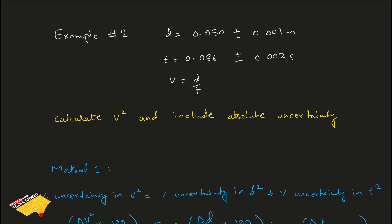In the second example, you are given a distance d and a time t, with a formula for speed v. You have to calculate v² and include the absolute uncertainty. First, calculate v² as (0.050 over 0.086)², which equals 0.34 m²/s². Note the units and that the answer is written to two significant figures — watch the previous video in this playlist if you need a reminder on significant figures.